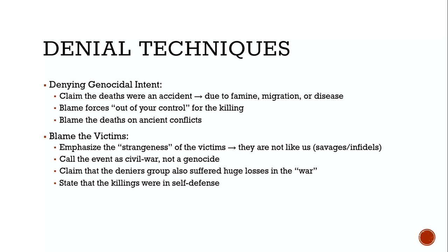Those are the different stages of genocide. We're going to look at case studies in more detail, but it's important to understand these stages. There is an individual obligation and responsibility — genocides do not occur in a day. They occur because people go along with things, spread propaganda, and participate in dehumanization and symbolization. Ultimately, it rests on individuals in society whether or not something like this will happen. Thank you for listening.